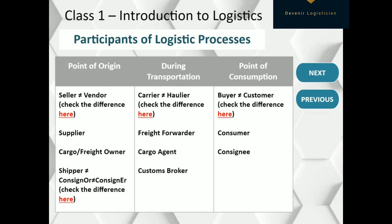Now I would like to skip the second column and come to the third one, where we speak about the person who receives our cargo. As I mentioned, if there is a seller on one end, there is a buyer on the other. The buyer means покупатель. How else can we call our buyer? A customer, of course.